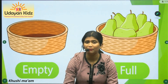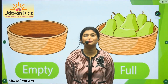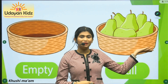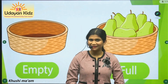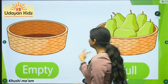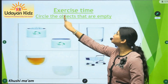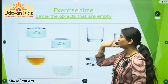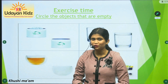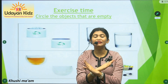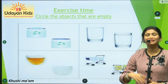I hope that by now you have understood the difference between full and empty. Now it is time for a fun exercise. Circle the objects that are empty — you have to circle all the objects that are empty, means khali. Take two minutes and solve the worksheet.